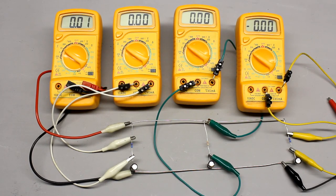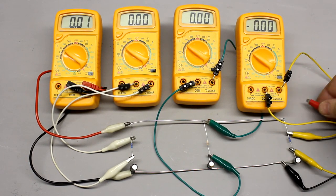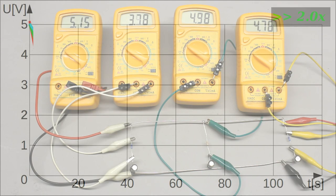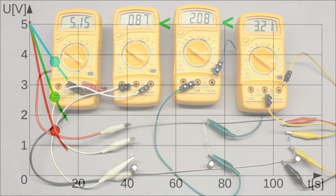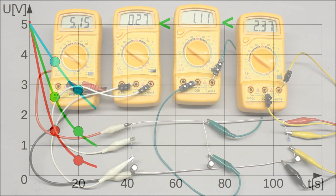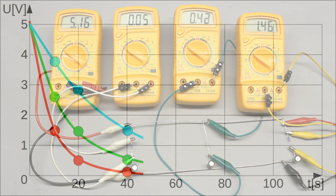The voltage drop across the resistor is maximum at the beginning of the charging procedure, falling exponentially to zero. In contrast to the capacitor, the voltage drop across the resistor after a fixed span of time is increasing with increasing resistance or capacitance of the circuit.